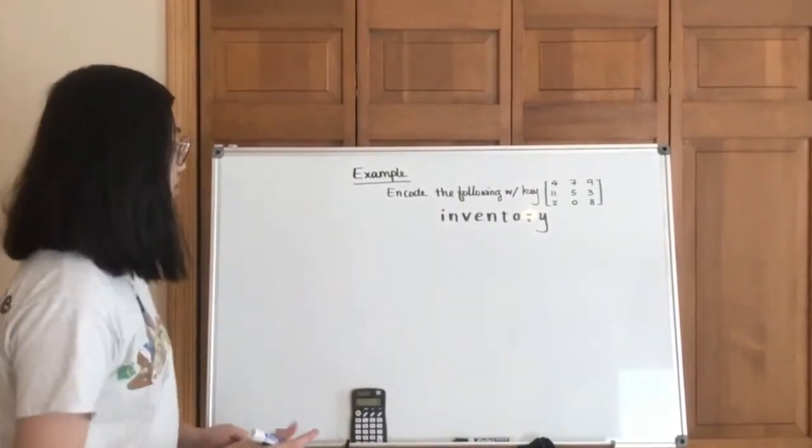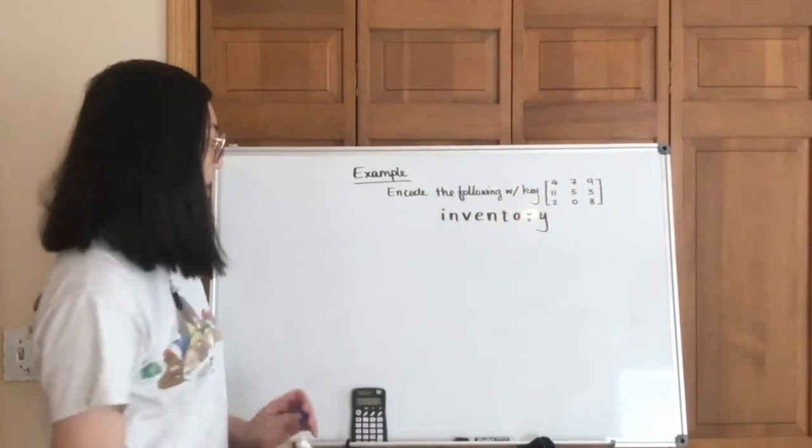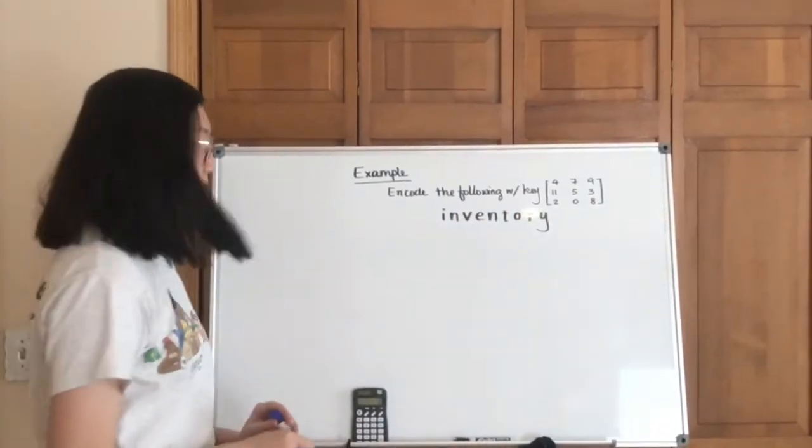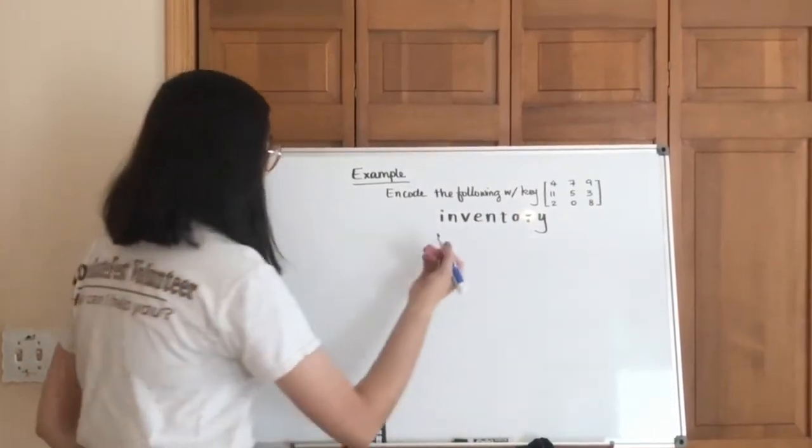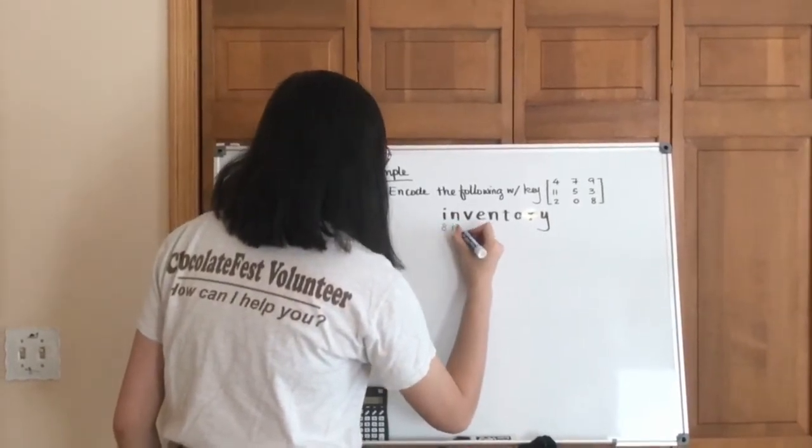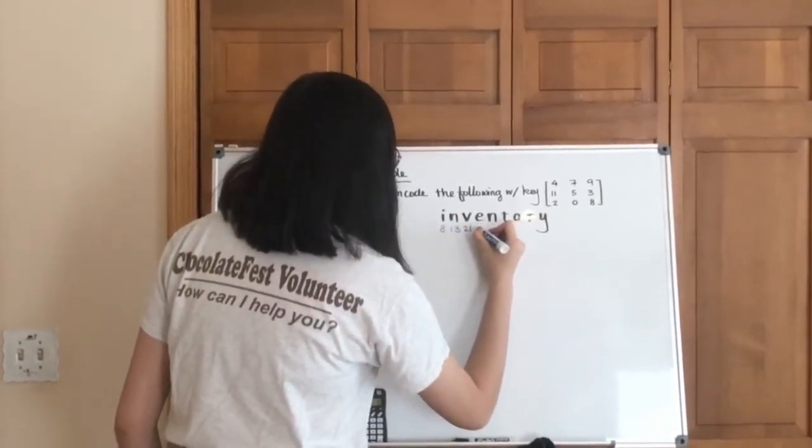So let's just dive right in. So we have a key, and we're going to encode inventory. So first up, we always write down the numbers that each letter has been mapped onto.